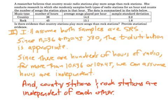Since there are hundreds of hours of radio, far more than 10 times whatever, we can assume that hours are independent within country and within rock. This new red thing is a new way we have to think about independence. Here we're checking if they're independent within country and within rock. And then we also want to make sure that country and rock as big categories are independent of each other. It just seems logical that the songs played on country stations and the songs played on rock stations are independent of each other. This is the one little wrinkle—you're checking independence within each sample, and then also a logical condition that things are independent of each other.